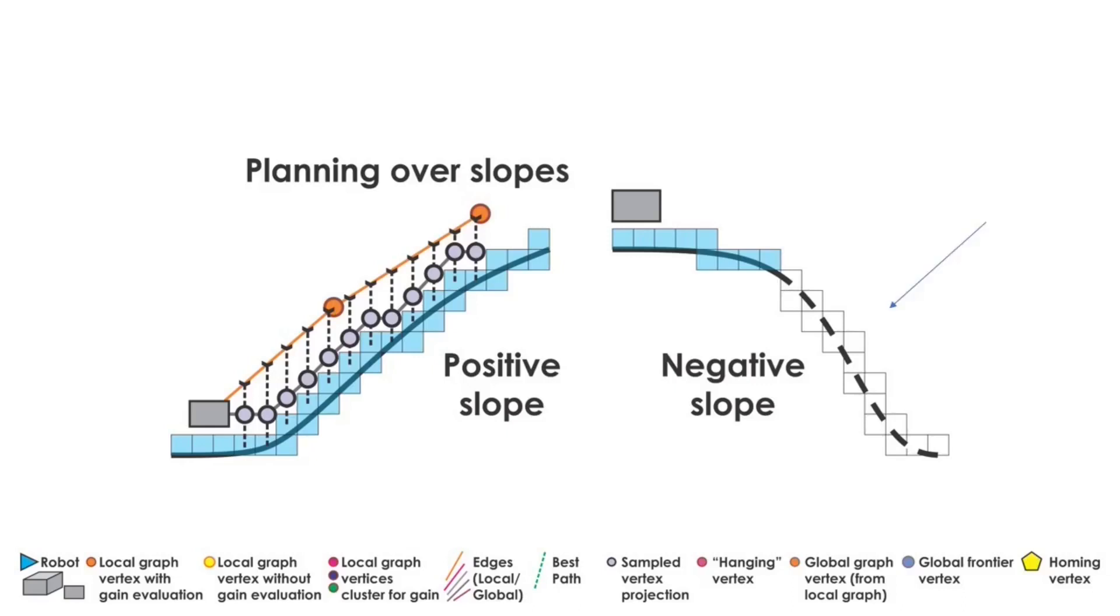Importantly, in the presence of negative slopes, part of the slope is not visible to the robot. In such a scenario, only the edges whose both end vertices have ground below them are projected as described before. The vertices that are in free space but don't have a mapped ground below them and can be connected to the graph using edges within the inclination limits are called hanging vertices.